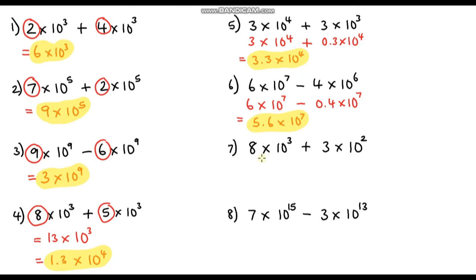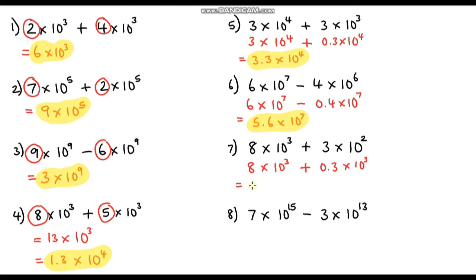Question 7: 8 times 10 to the power 3 plus 3 times 10 to the power 2. Keep the larger power: 8 times 10³. Rewrite the second number with power 10³ — multiply the power by 10, so divide the base: 3 ÷ 10 = 0.3 times 10 to the power 3. Adding base numbers: 8 plus 0.3 is 8.3. Answer: 8.3 times 10 to the power 3.